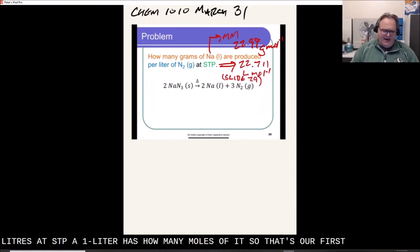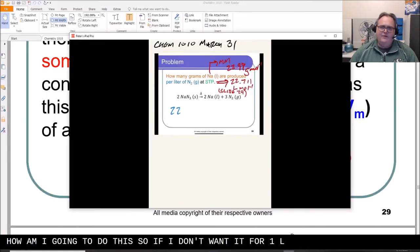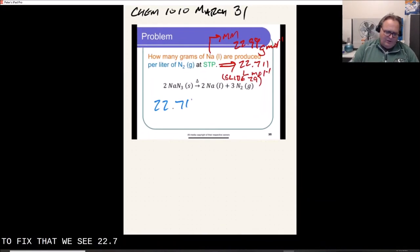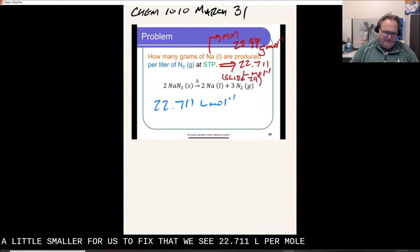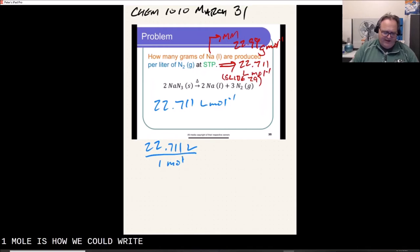So that's our first step for this particular problem. So if I don't want it for one liter, 22, we see 22.711 liters per mole, effectively. Or another way, and probably an easier way to understand this, 22.711 liters per mole, is how we could write that volume at STP for the nitrogen gas.